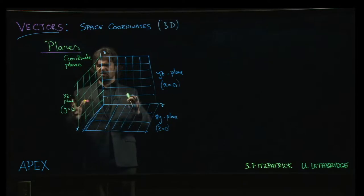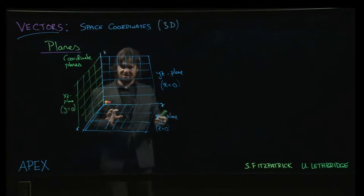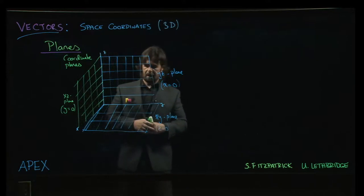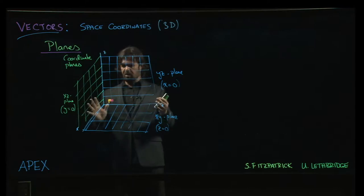The first octant is the one where x, y and z are all positive. That's kind of the region that's bounded off by the planes as I've drawn them here. But we have other octants and nobody ever remembers how they're actually numbered. It's not necessarily that important.